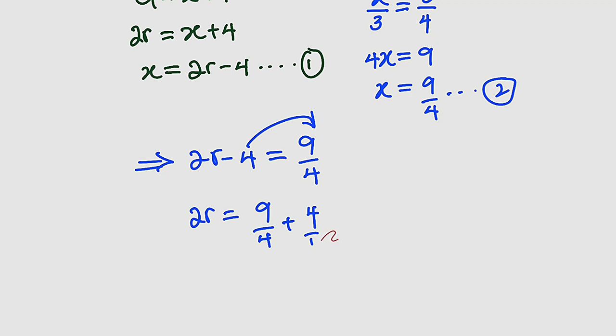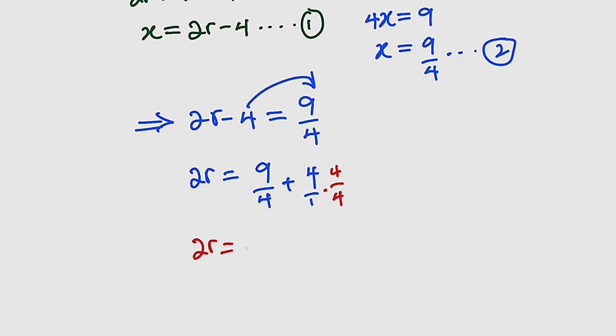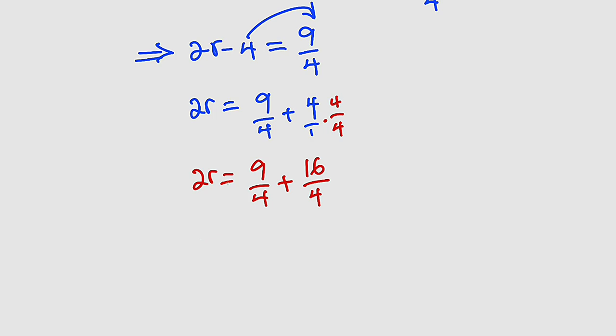So that 1 times 4 is 4. And therefore, 2r is equal to 9 over 4 plus 4 times 4 is 16 divided by 4. And you know, once you have common denominators, you are always free to add the numerators together. 2r is equal to 9 plus 16 is 25 divided by 4.